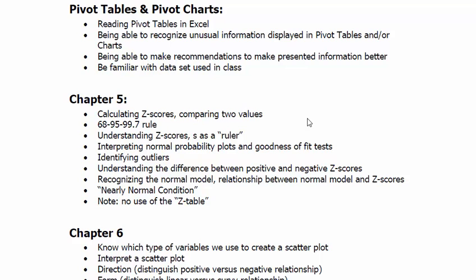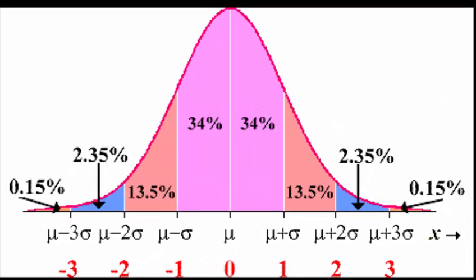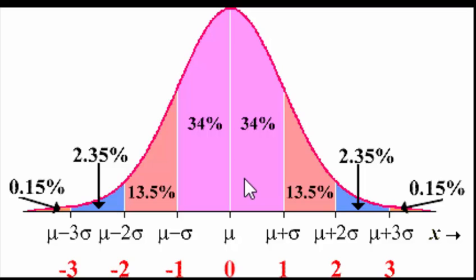I can't stress enough the 68-95-99.7 rule — it is completely and utterly essential. Looking at the graphic: 68% of the data is within negative one and positive one standard deviation; 95% is within negative two to positive two; and 99.7% is within negative three to positive three. Outside of 99.7% is 0.3%, and dividing that in half gives 16% on each tail outside of 68%.